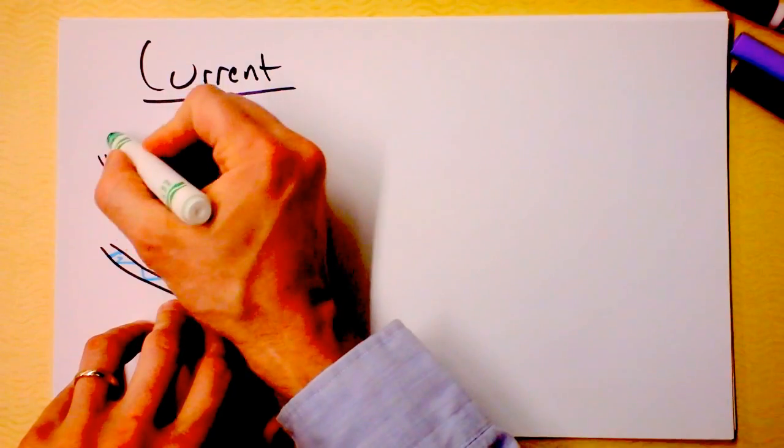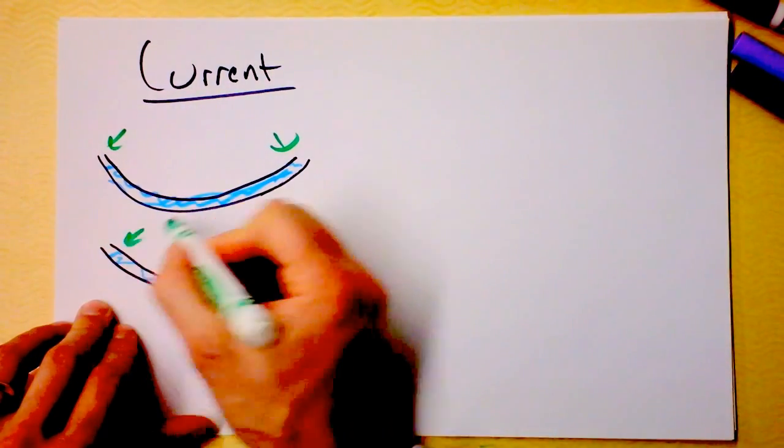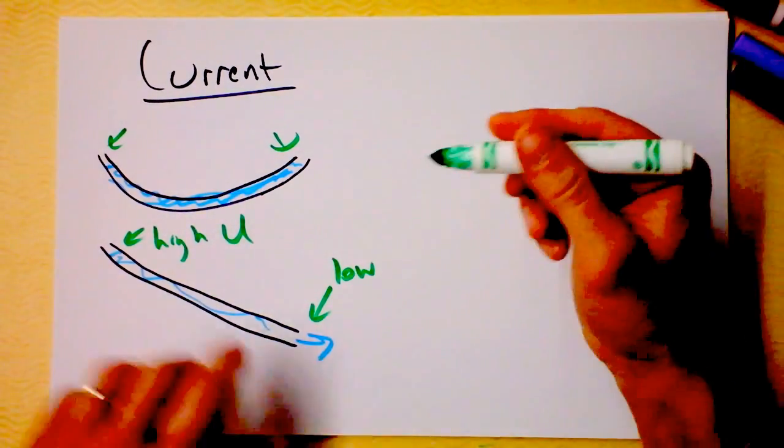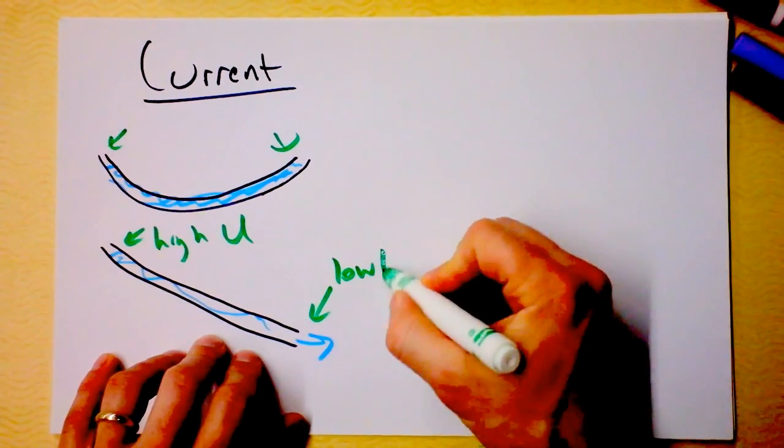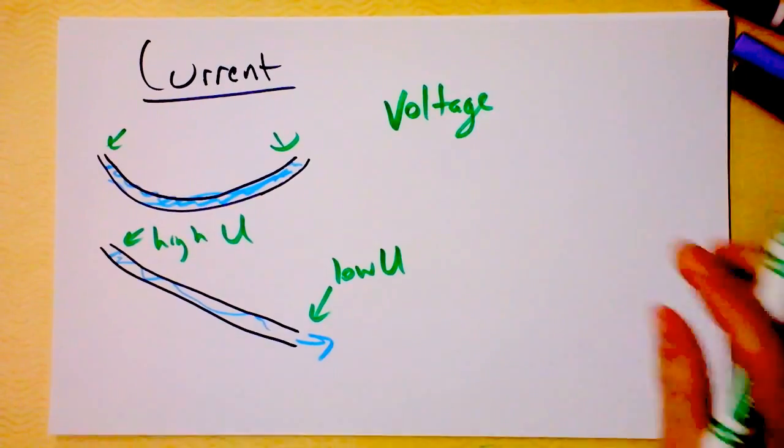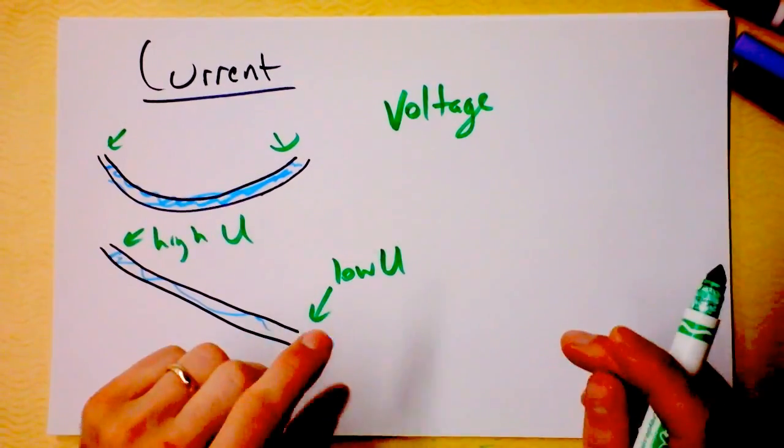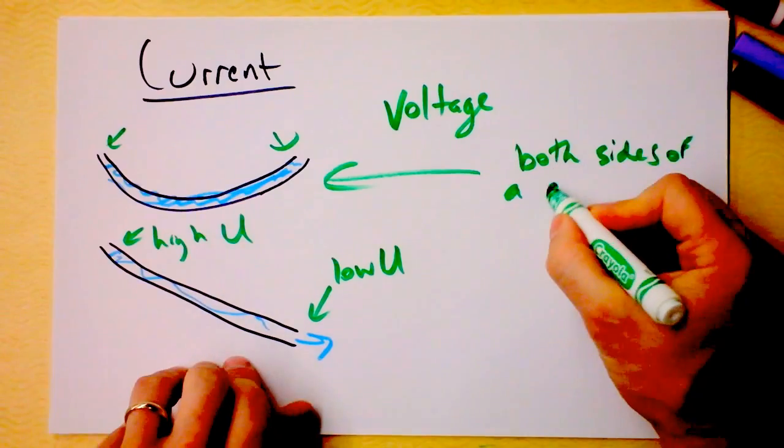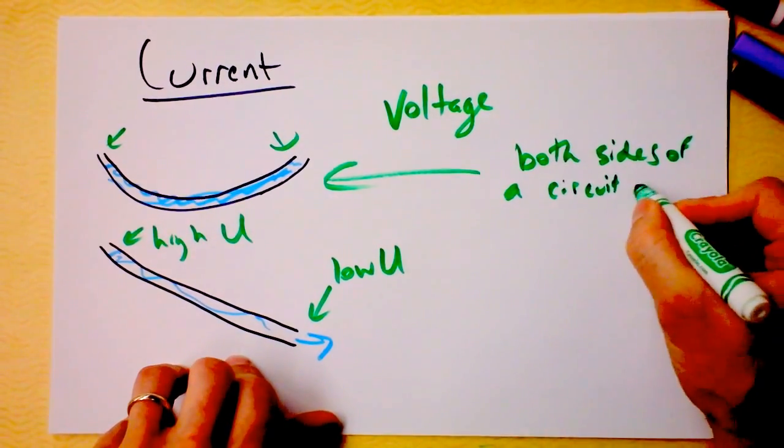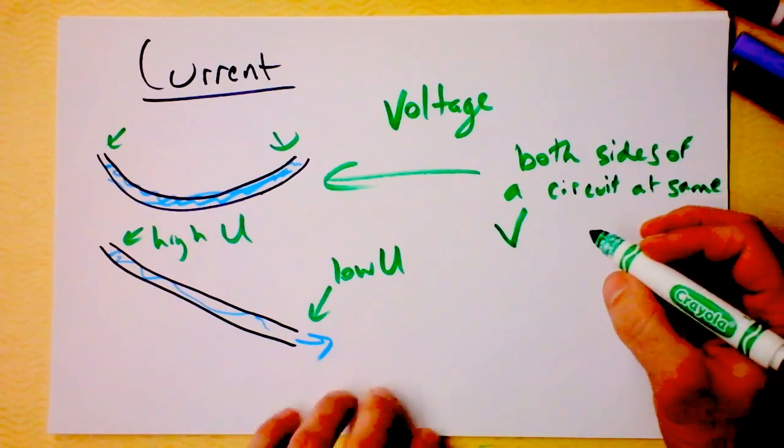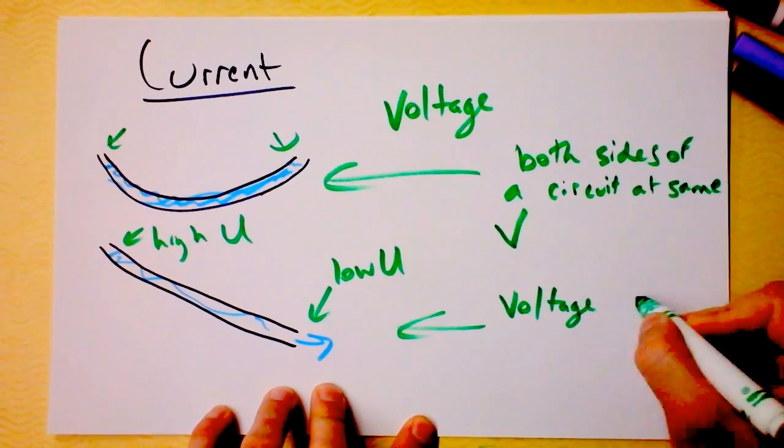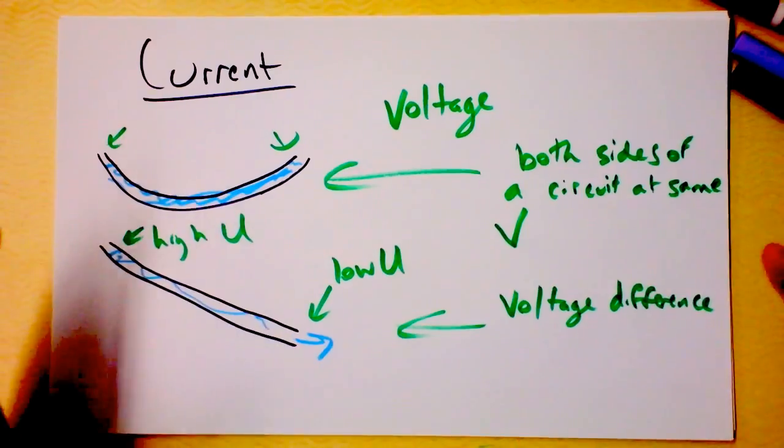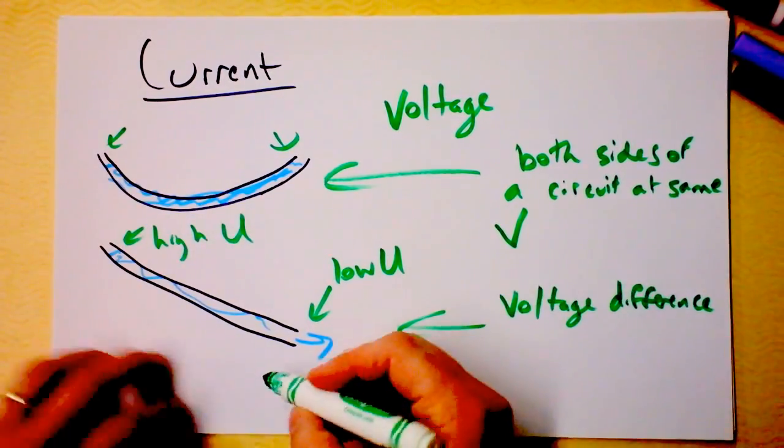This would be a certain potential energy here and a certain potential energy there. This is a high potential energy and this is a low potential energy. But really we're not talking about potential energy so much. We're talking more about potential. And so we can start to think about voltage. It's voltage that determines whether something will cause charges to move or not. And this would be both sides of a wire at same voltage. And this would be voltage difference. A voltage difference would cause a potential difference, that's what it is, but it would cause a current, which would cause a charge to move.